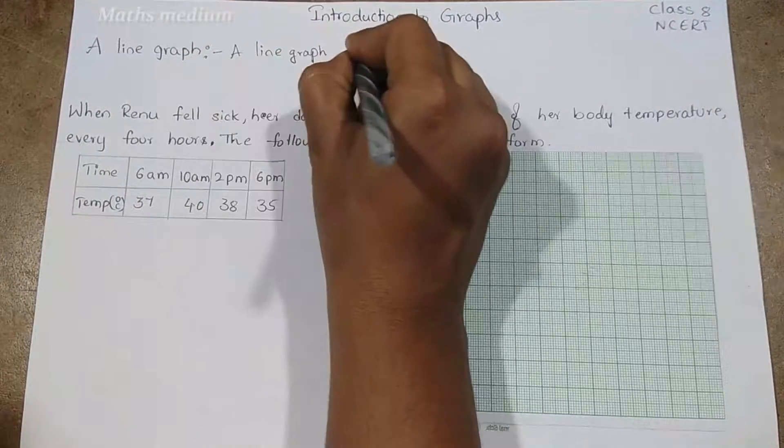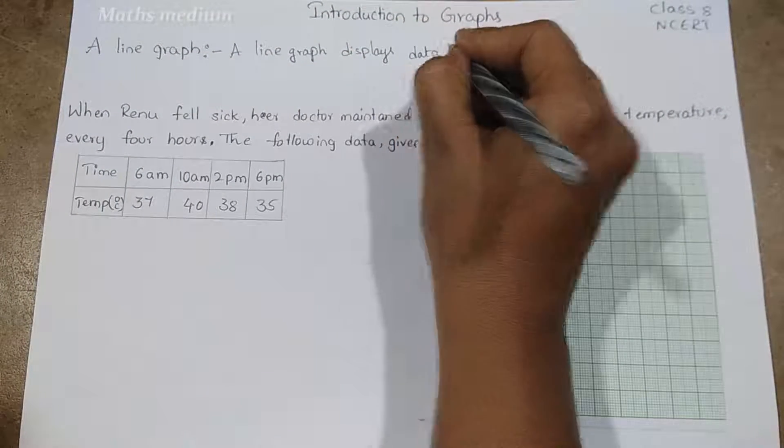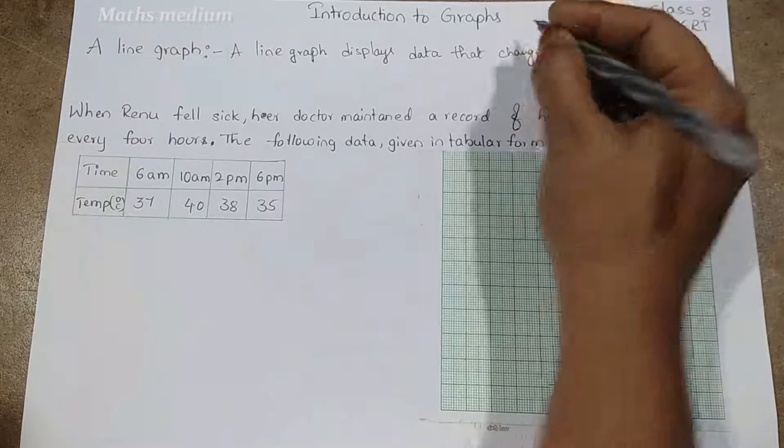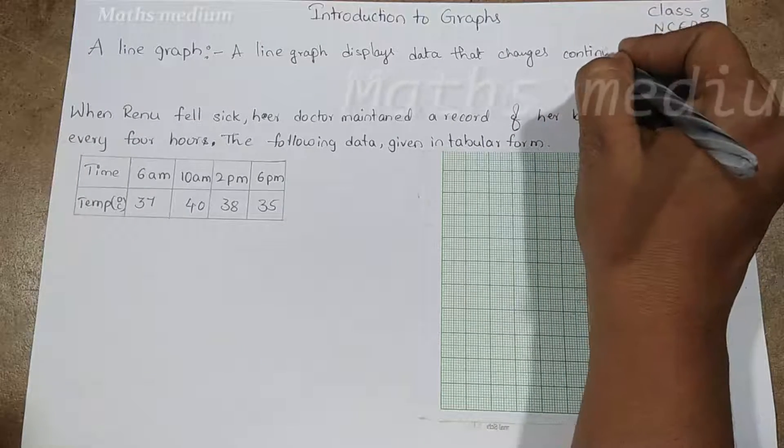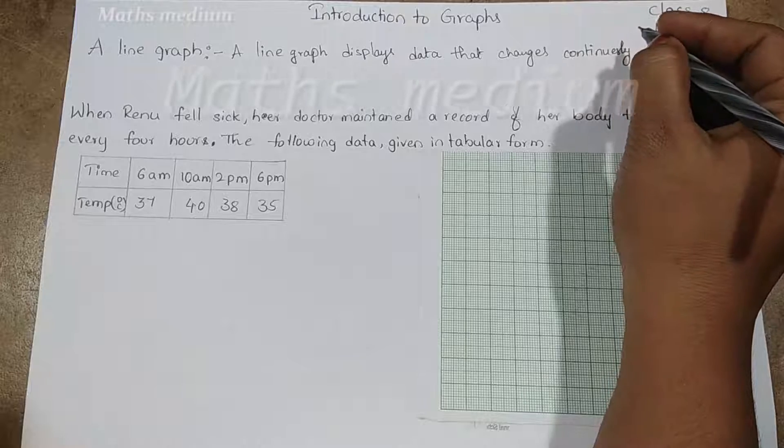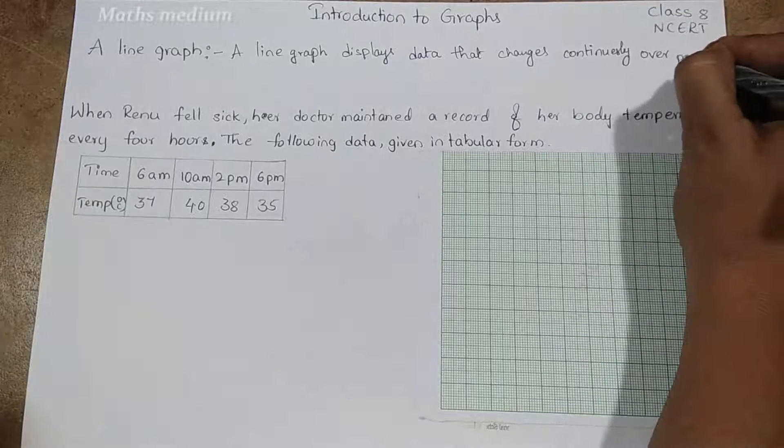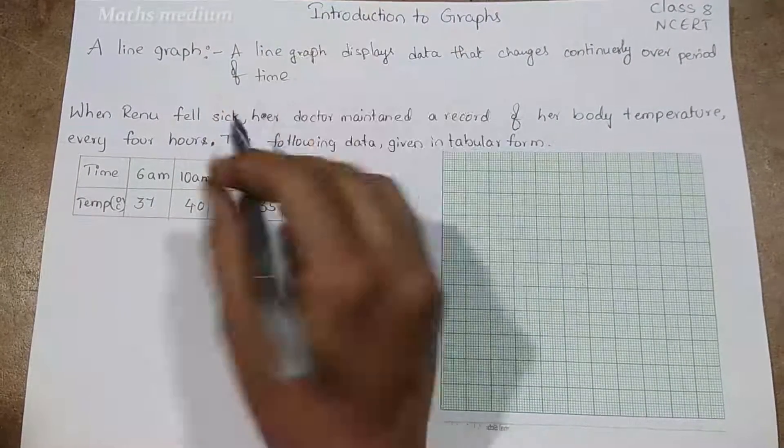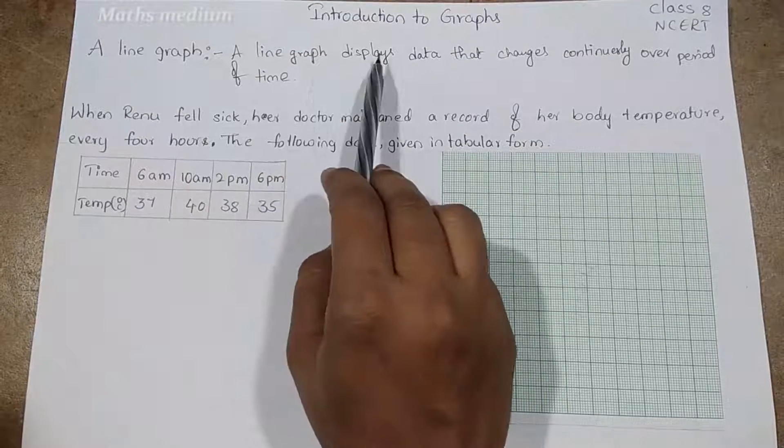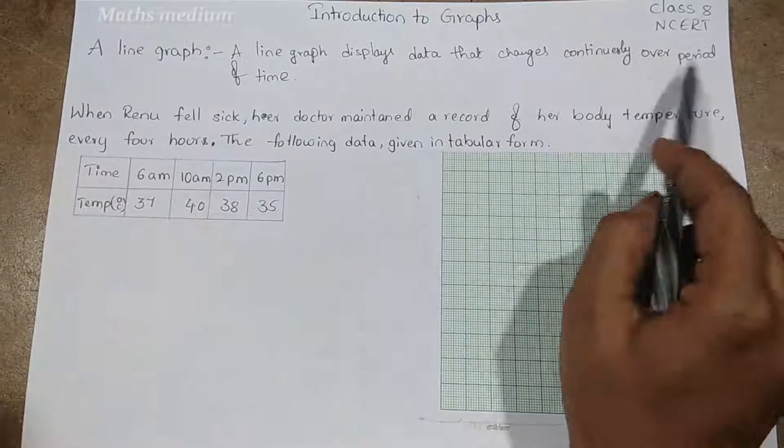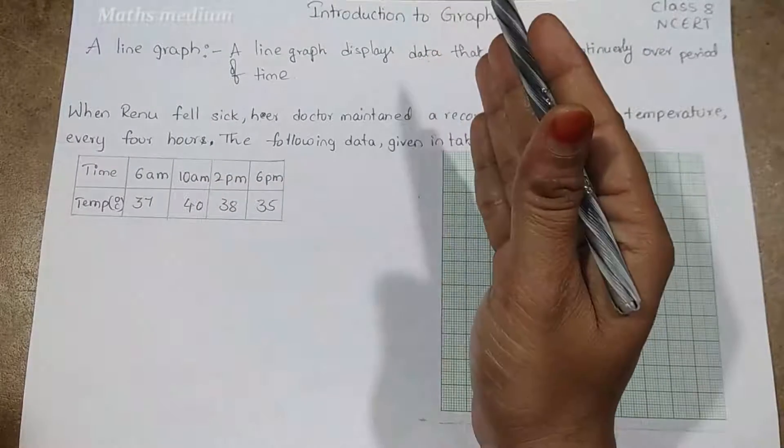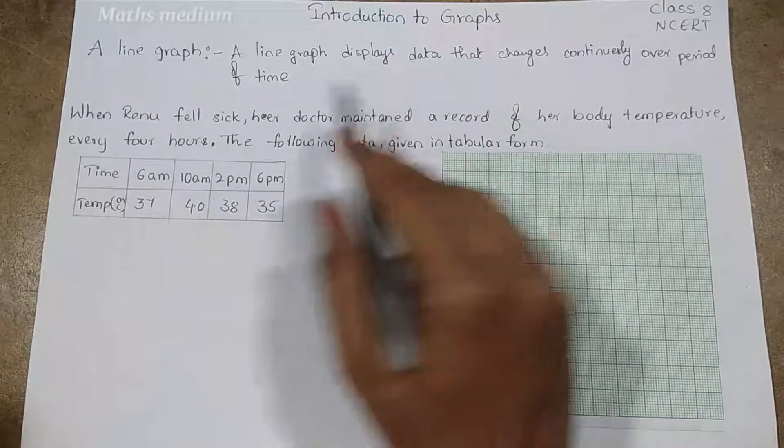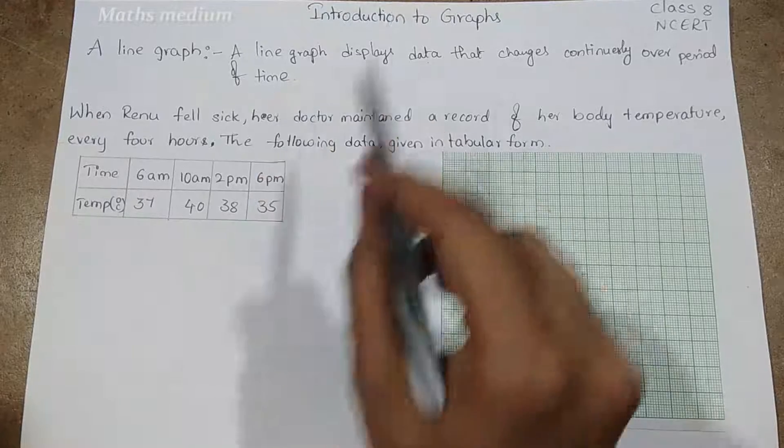After that, we have to learn line graph. What is meant by line graph? A line graph displays data that changes continuously over period of time. Some period of time it has changed; after some period that can be changed by varying according to that time. That is called line graph. Here I am going to tell you with one example, then you will get better understanding.